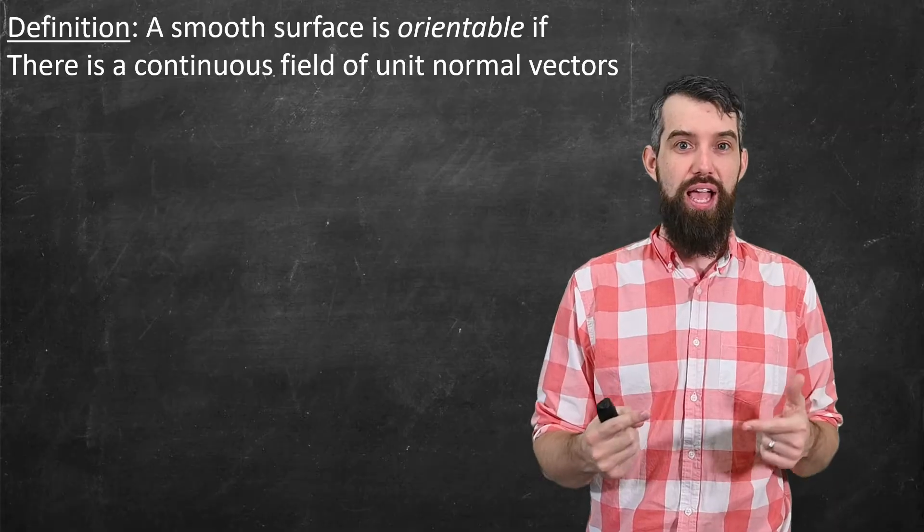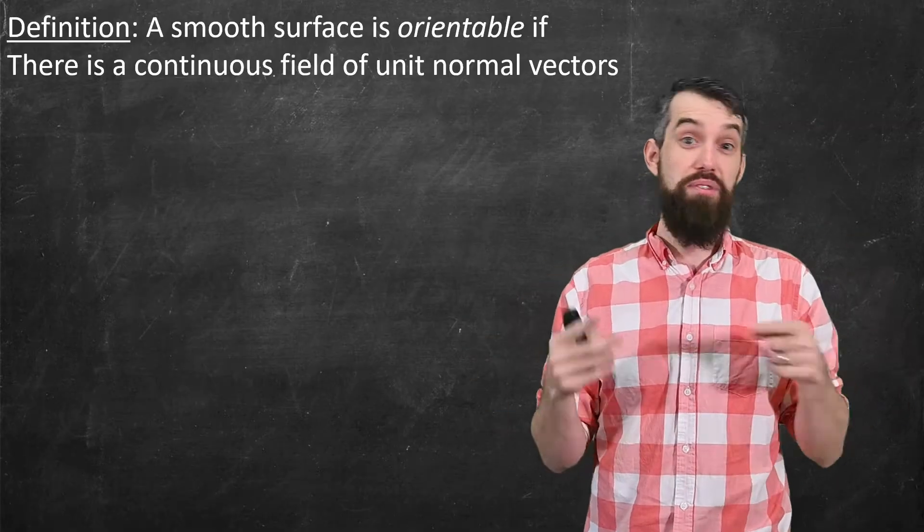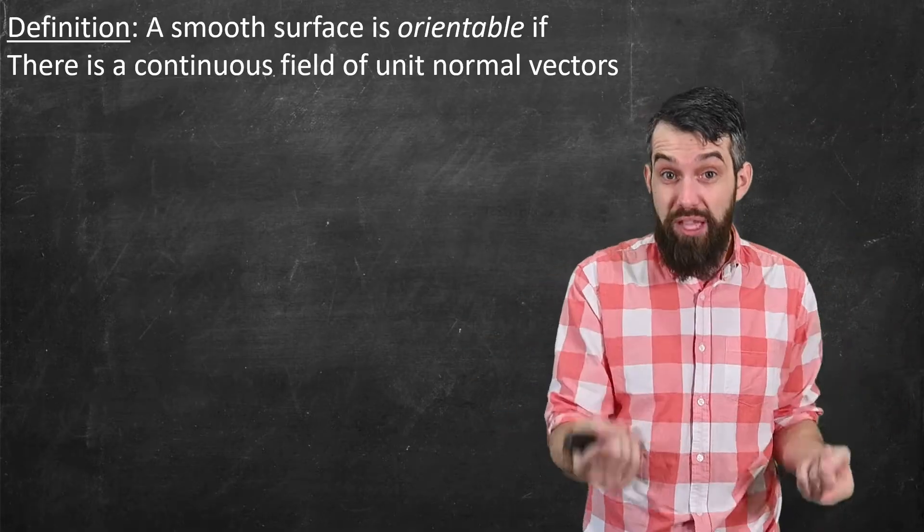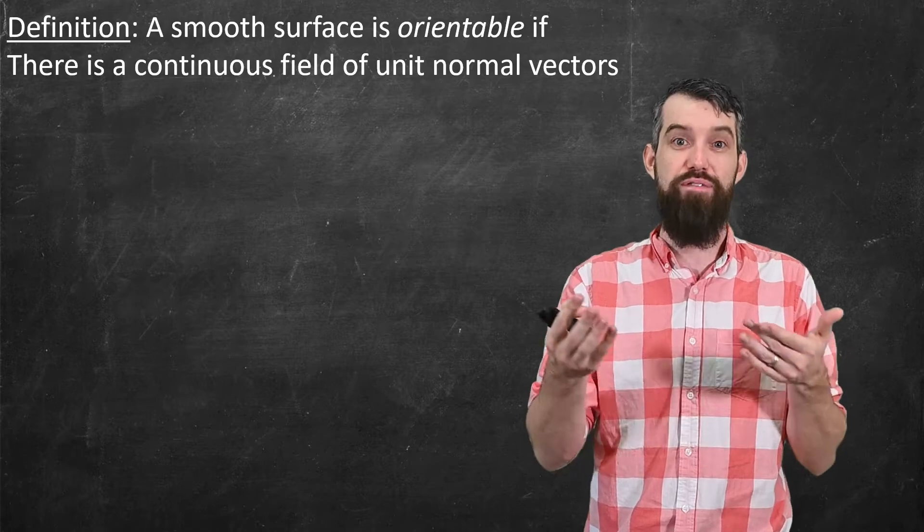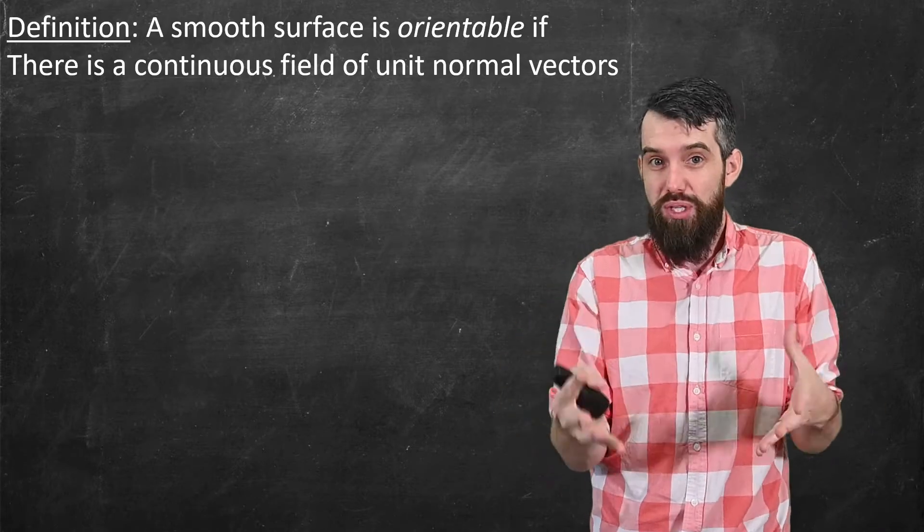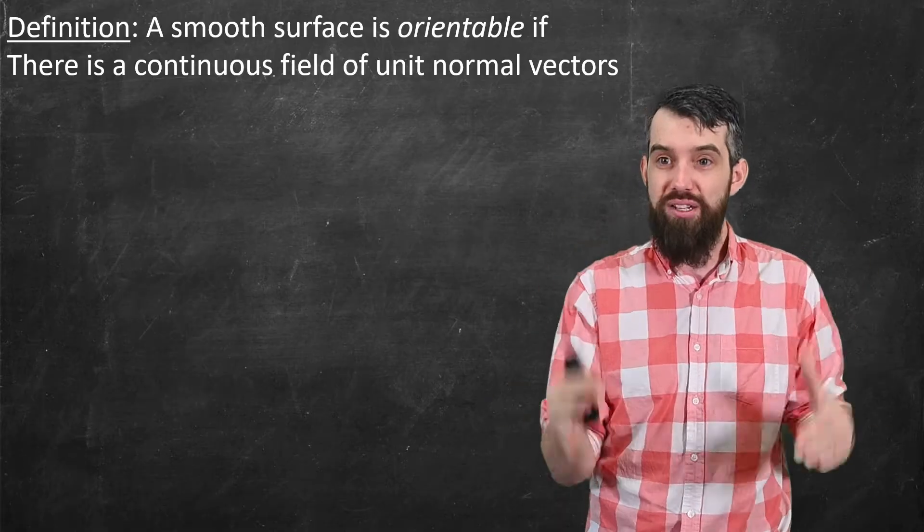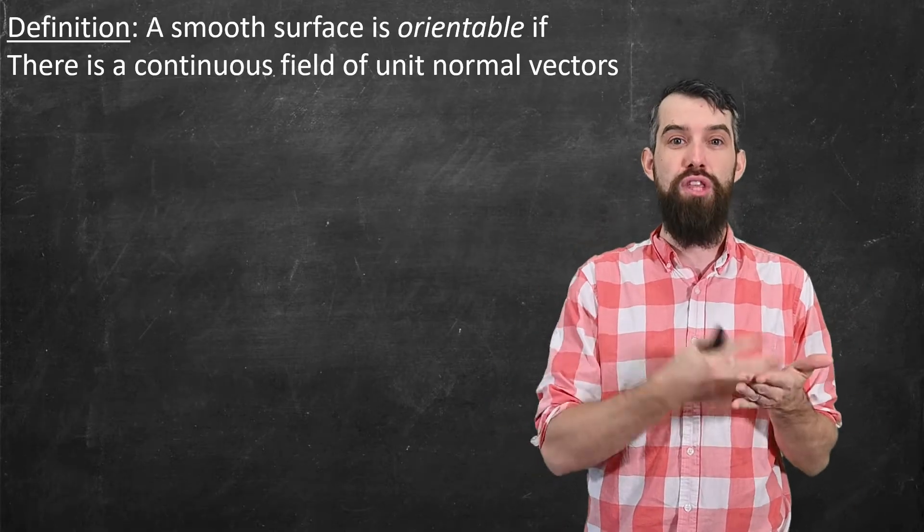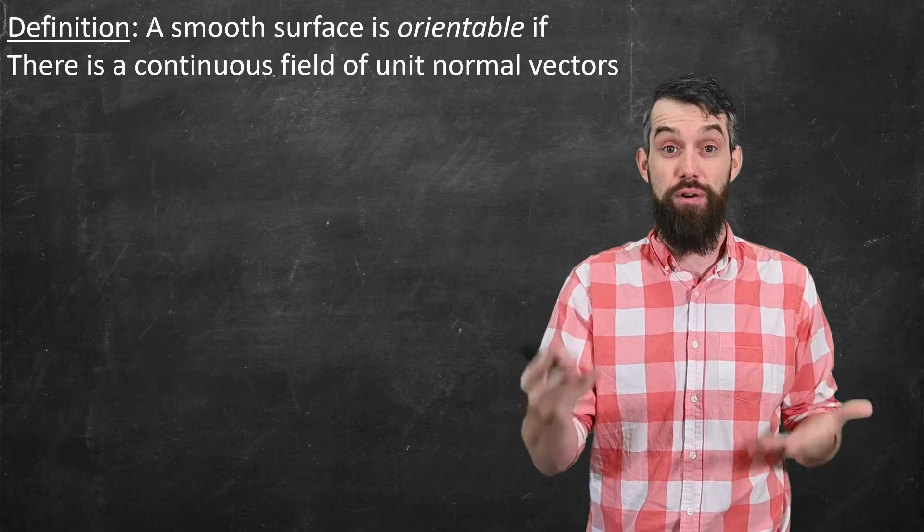So this motivates my definition. A smooth surface, and we've talked about a surface being smooth previously in my playlist on vector calculus. The link to that is down in the description. Regardless, we have a smooth surface. We're going to call that being orientable if there is a continuous field of unit normal vectors assigned on that surface.